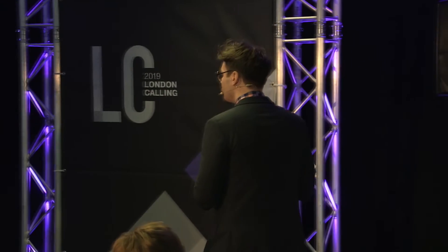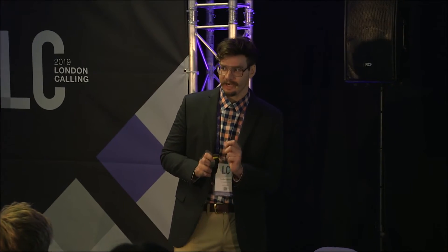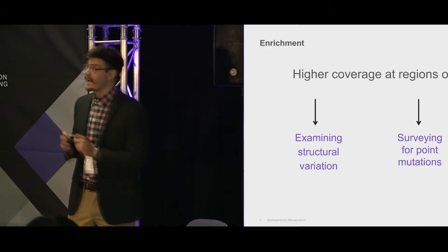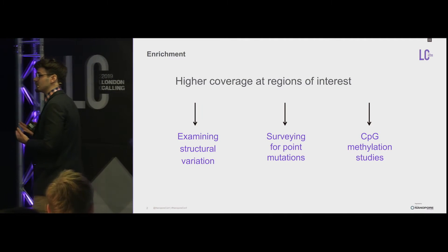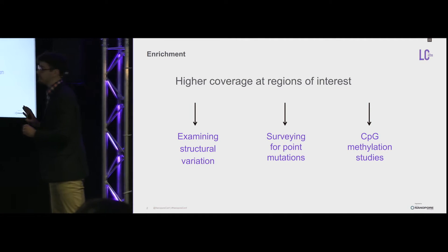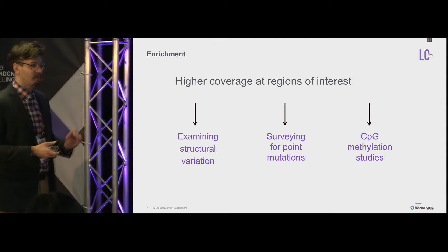I'm going to be talking about our work using the Cas9 enrichment protocol to look at regions of interest. We're using this to look at multiple features, including structural variations, point mutations, and CpG methylation. We have loci that are clinically actionable, and that's why we want to generate this high coverage data, because that makes analysis of all of these features a lot more facile, especially looking at single point mutations.